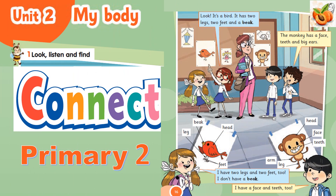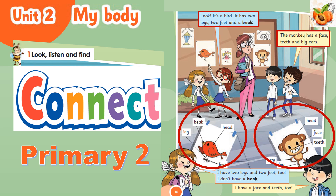Look, listen, and find. It's a bird! It has two legs, two feet, and a beak. The monkey has a face, teeth, and big ears. I have two legs and two feet too. I don't have a beak. I have a face and teeth too.